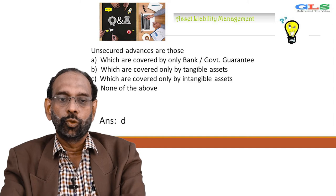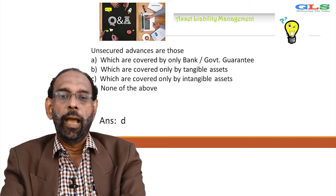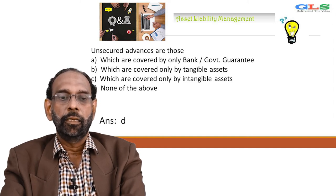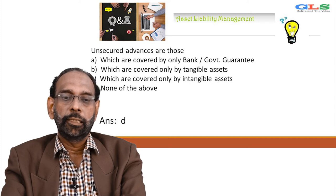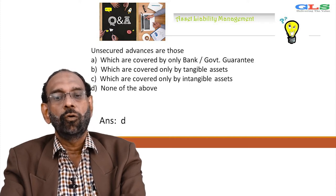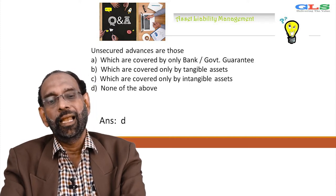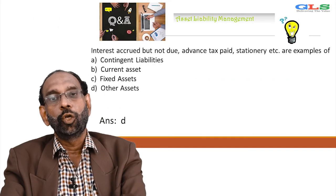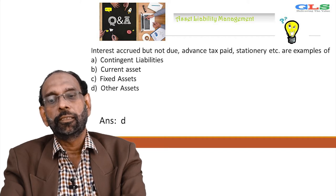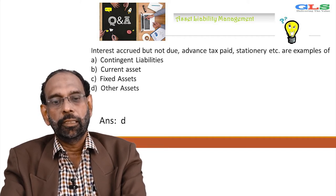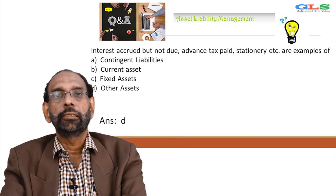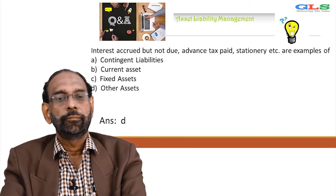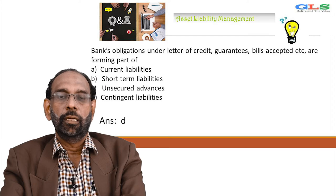Unsecured advances are those which are — A: covered by only bank government guarantee, B: covered only by tangible assets, C: covered only by intangible assets, D: none of the above. The answer is D, none of the above. Interest accrued but not due, advanced tax paid, stationery etc. are examples of — contingent liabilities, current assets, fixed assets, or other assets. It is an example of other assets.